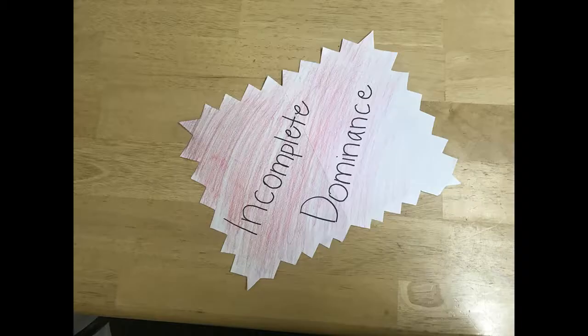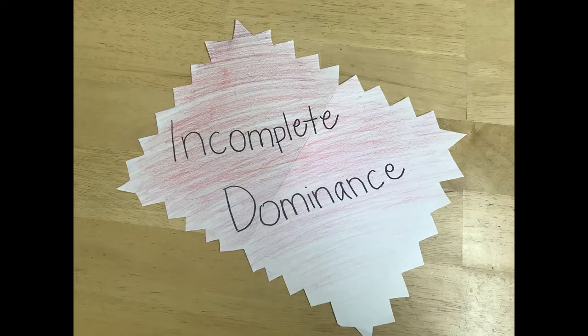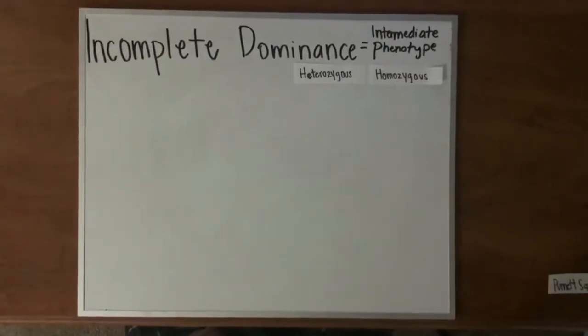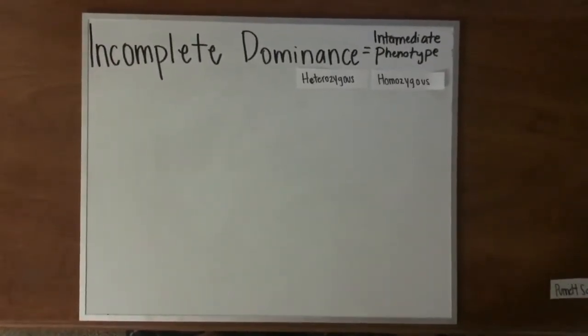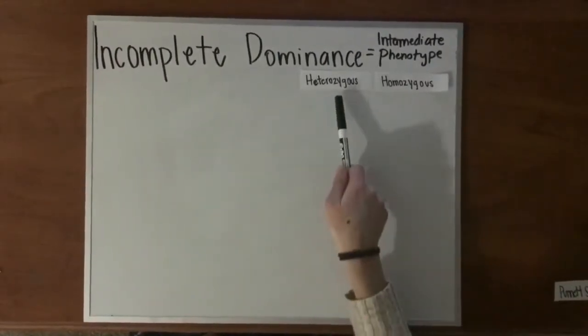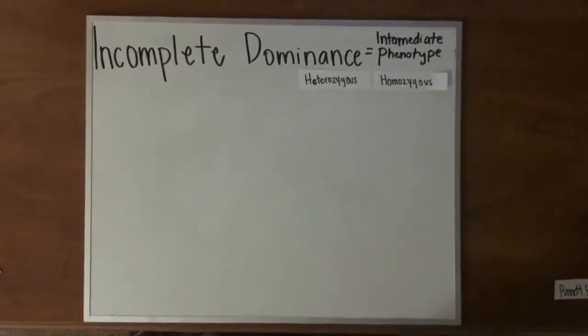Today we are going to learn about incomplete dominance. Incomplete dominance is when the organism that has the heterozygote genotype takes on an intermediate phenotype.